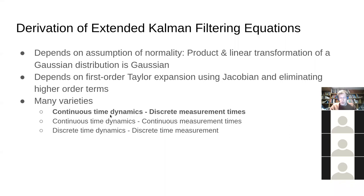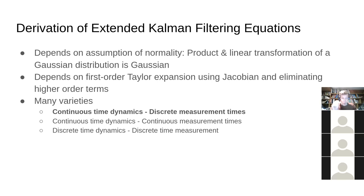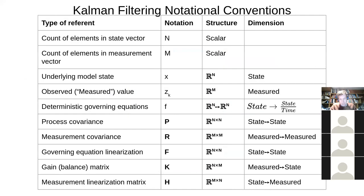The first attribute is whether time is continuous or discrete. For the extended Kalman filter, if time is continuous you have one set of methods; if discrete you have another. For epidemic models we're dealing with continuous time with numerically integrated systems, so we need the continuous-time versions. The second attribute is whether measurement times are discrete or continuous. For certain industrial and avionics needs, you have essentially continuous measurement from a sensor. For our case, we have discrete-time measurements — daily case counts, hospitalizations, or deaths.